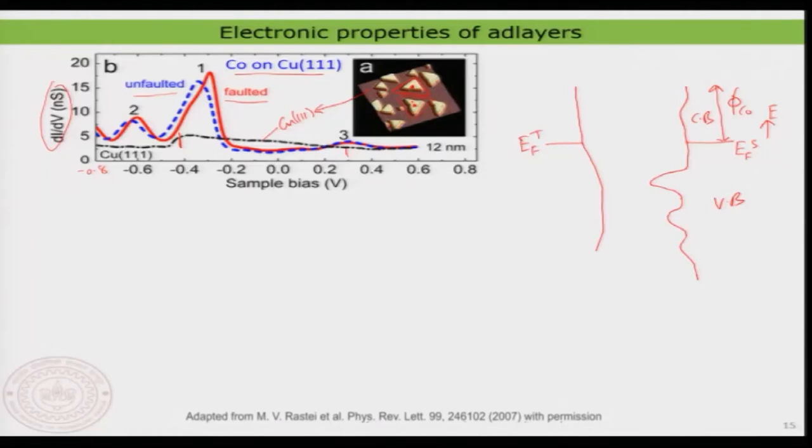Depending on the type of island you look at, you see a variation in the density of states. This is important because if you want to use cobalt islands as a catalyst or in electronic applications, it is critical to know the electronic structure. The conduction band and valence band density of states are directly related to reactivity in chemical applications, and also to the transport of charge carriers in the material.